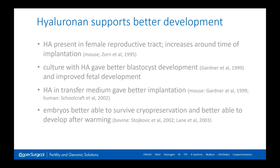We can add hyaluronan to single step media. Hyaluronan is known to be present in the female tract and increases around the time of implantation. Work by David Gardner's group has shown that embryos cultured in the presence of hyaluronan form better blastocysts and may also implant better. There's also some evidence that embryos survive freezing and thawing and develop better after the warming process if they've been cultured in the presence of hyaluronan — so there are potential benefits to adding this compound to our culture media.